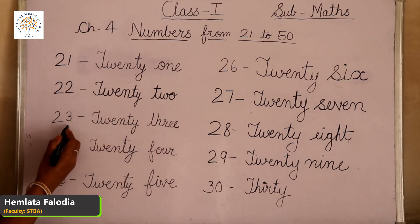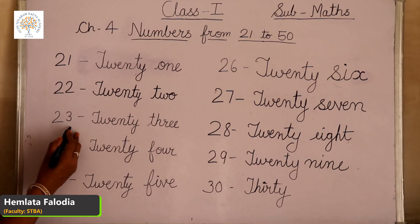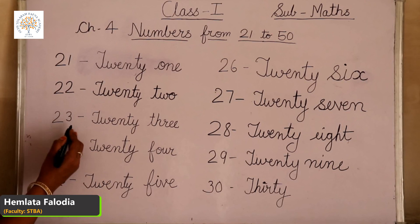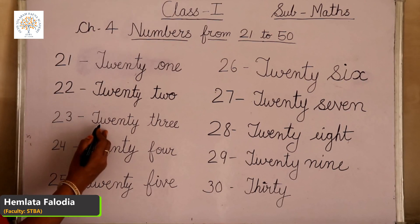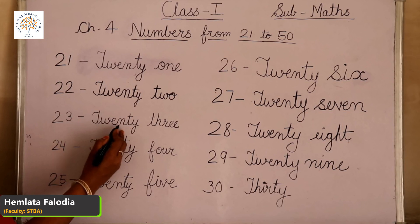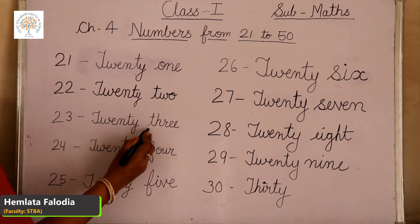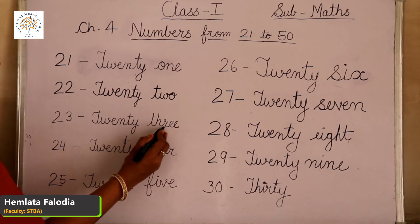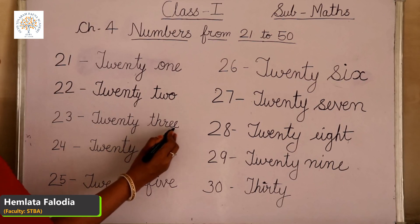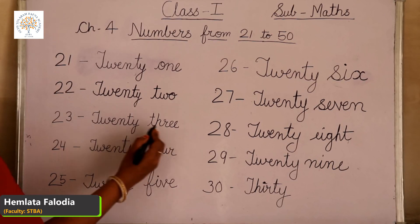Now come to the next, which is 23. 20 plus 3 is equal to 23. T-W-E-N-T-Y, 20, T-H-R-E-E, 3. This is 23.